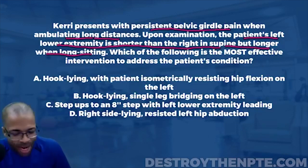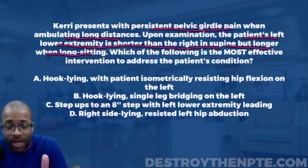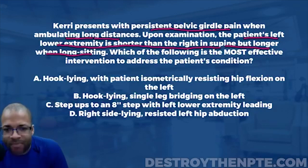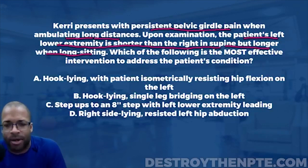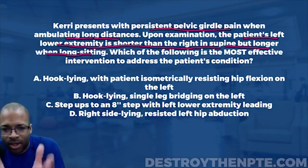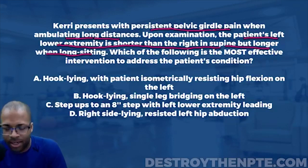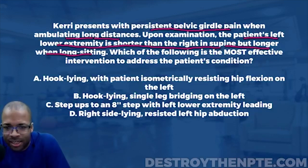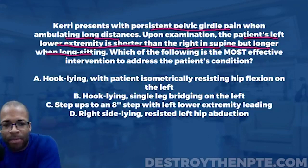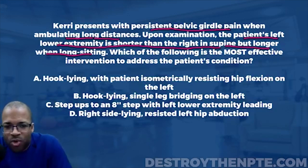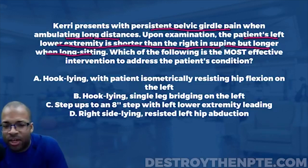We have a special test for this called the supine to sit test - you need to know this for the NPTE, it's very common. The patient lies supine and we check their malleoli bilaterally, comparing one leg to the other. That is exactly what this question is describing: left lower extremity shorter in supine, then longer when the patient goes into long sitting. You have to understand what this test means in order to answer the question.